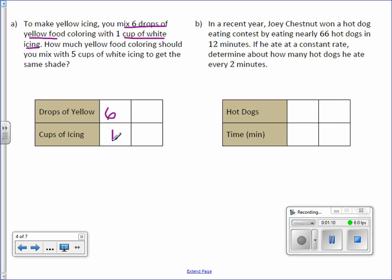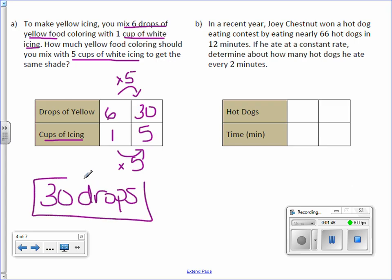Now let's fill in what we need to find. We want to know how many drops of yellow food coloring we need for 5 cups of white icing, so we're going to put 5 here. And we think to ourselves, how do I get from 1 to 5? Well, you multiply by 5. So you do the same in the other row. 6 times 5 is 30. So how much yellow food coloring do you need? You need 30 drops. Make sure you answer the question and not just fill in the table.